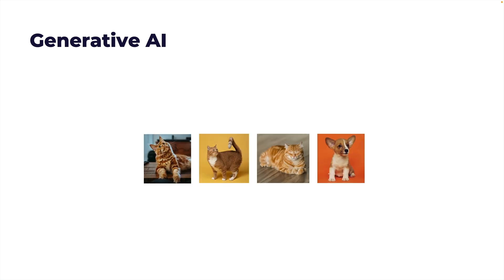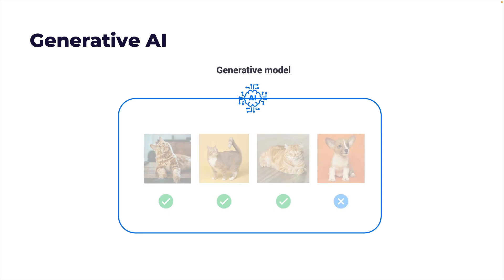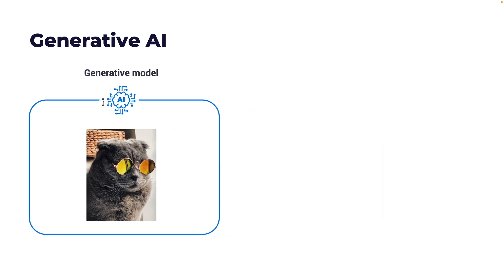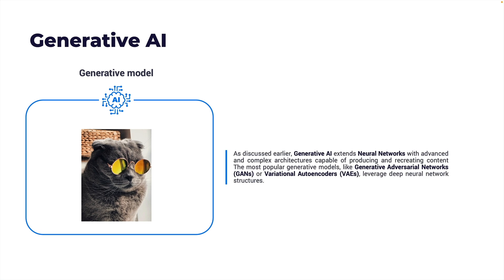Deep learning and neural networks serve as the foundations of Generative AI. Imagine having a set of photos of cats — a typical neural network would classify whether a given image is a cat or not. A generative model, on the other hand, would try to create a new image that looks like a cat but is a different version of the input image. Generative AI extends neural networks with advanced and complex architectures capable of producing and recreating content. The most popular generative models are GANs (Generative Adversarial Networks) and Variational Autoencoders (VAEs), which leverage deep neural network structures.